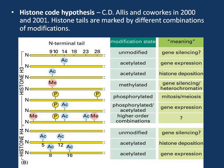According to this hypothesis, histone tails are marked by different combinations of modifications, and these modifications play a very important role in various DNA activities — such as in formation of chromatin structure and in gene expression. For example, acetylation of the lysine residue at the 14th position of histone H3 is performed by Type A histone acetyltransferase and is usually associated with gene expression.